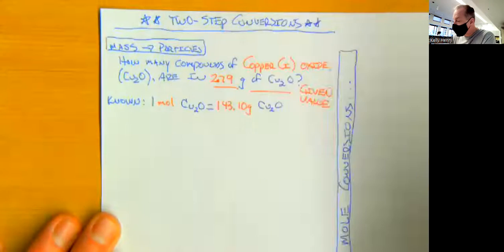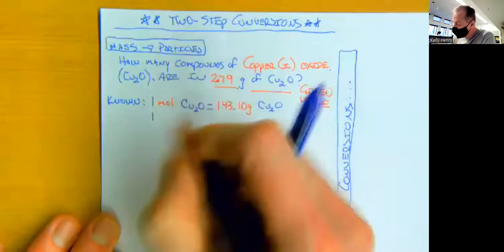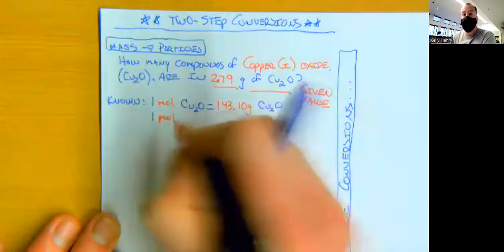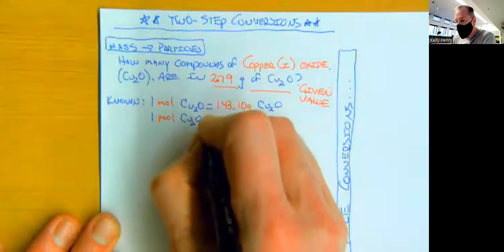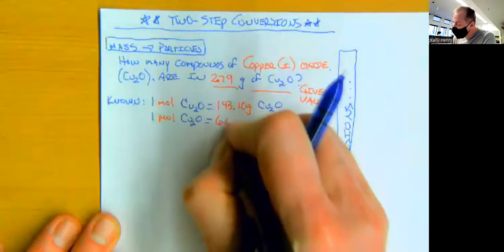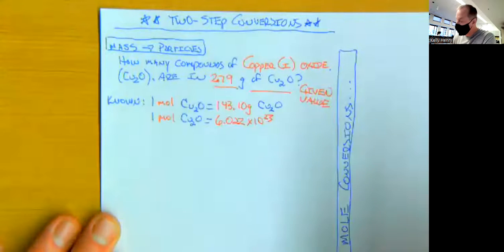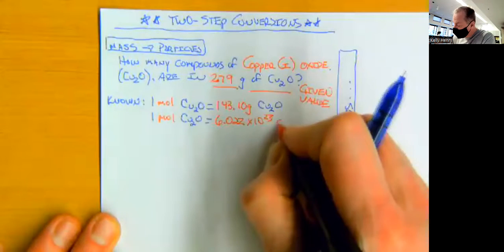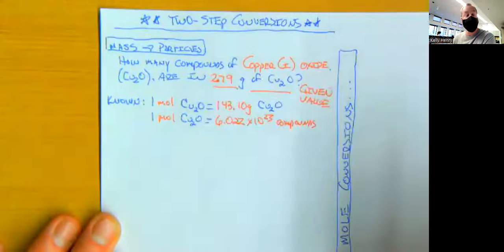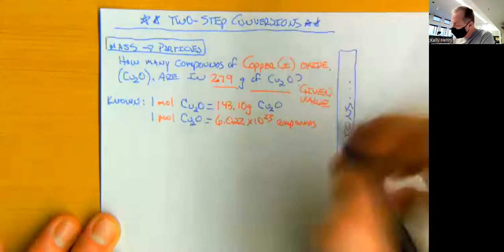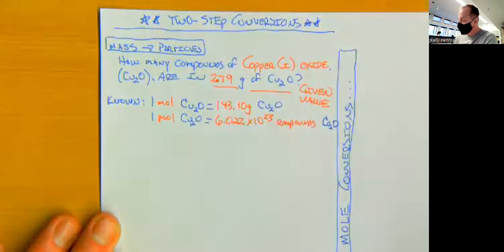We also know that one mole of copper one oxide is going to be equal to 6.022 times 10 to the 23rd compounds. We can also think of that as particles of copper one oxide.